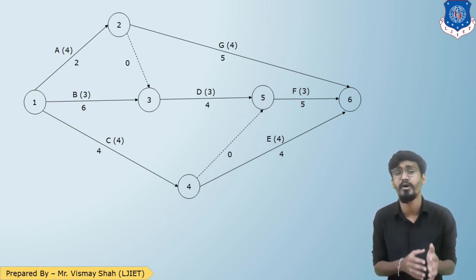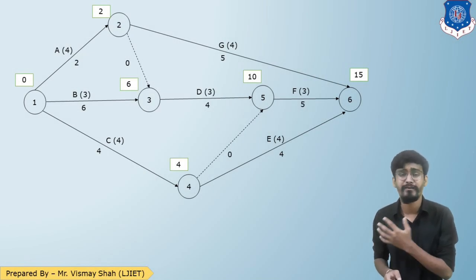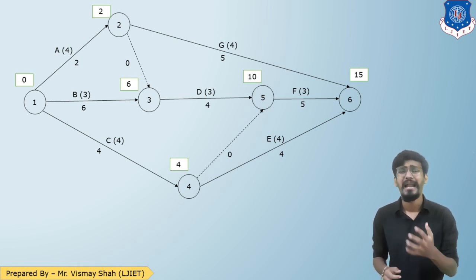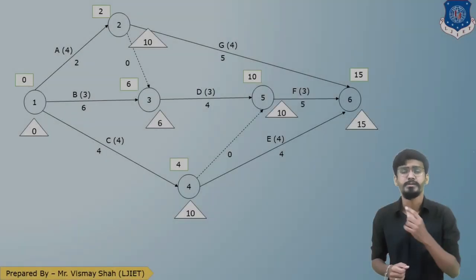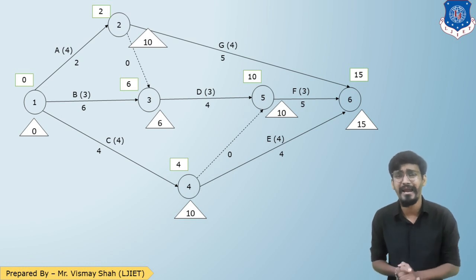The first step is to perform forward and backward path analysis. Here are the calculations for the forward path analysis, and we have obtained the final duration as 15 days. Here is the calculation for the backward path analysis. On the basis of the forward path and backward path, let us prepare the table of floats.